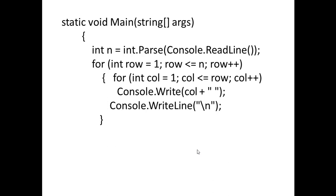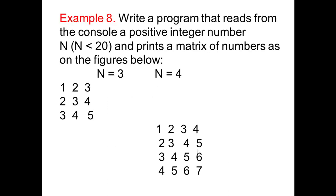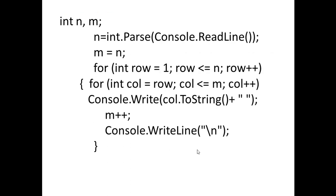We use counter loops for Example 8: write a program that reads from the console a positive integer number and prints a matrix of numbers as shown. You see on the screen the code of the example — we use the counter loop for statement.